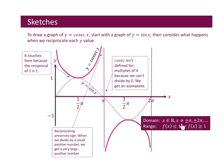The domain for cosec x: x can never equal ±π, ±2π — i.e., x ≠ nπ where n belongs to the integers. You can see from the graph we have asymptotes and cannot divide by zero.